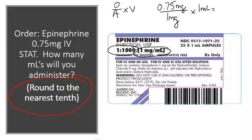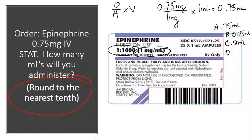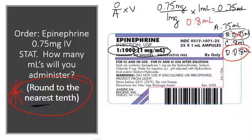Taking 0.75 divided by 1, multiplied by 1, you get 0.75 mL. If the multiple choice options are: A) 75 mL, B) 0.75 mL, C) 8 mL, D) 0.8 mL — the problem says to round to the nearest tenth. So the correct answer is 0.8 mL. If you forget to round, you might pick B, which would be wrong.